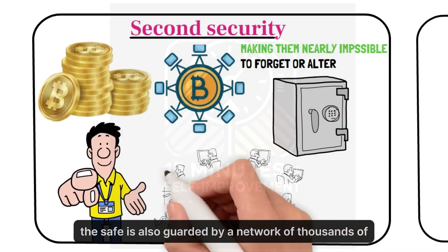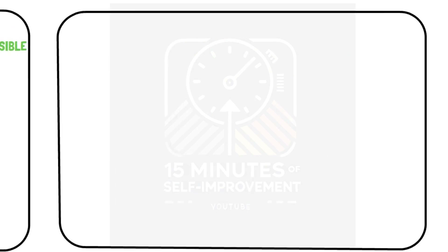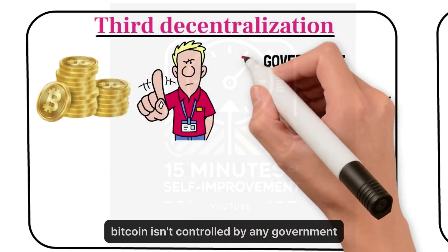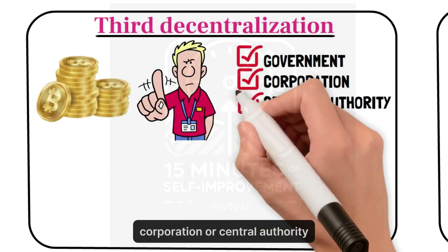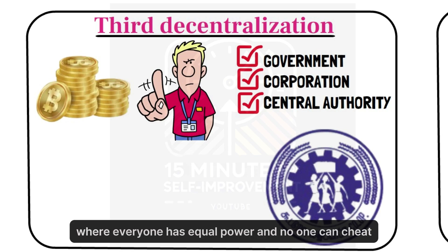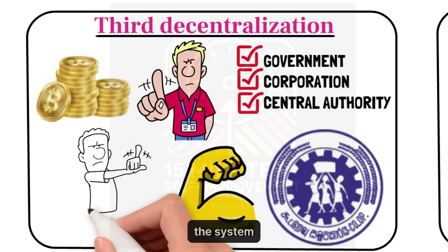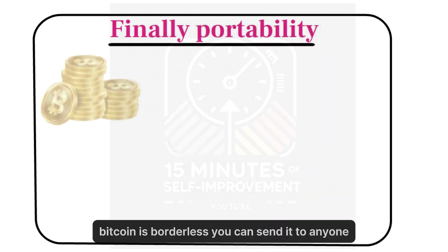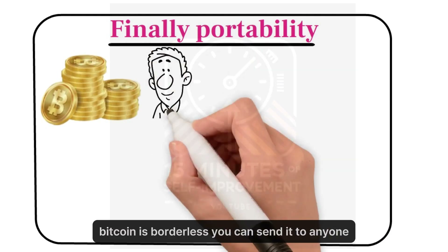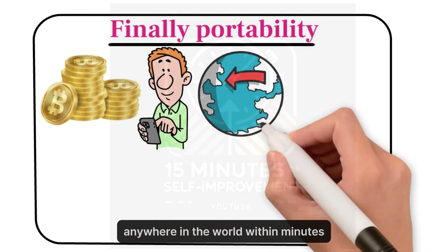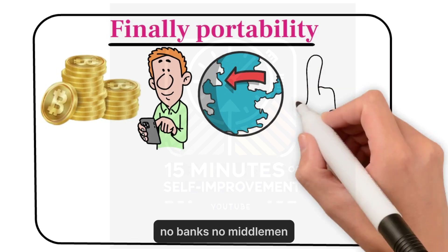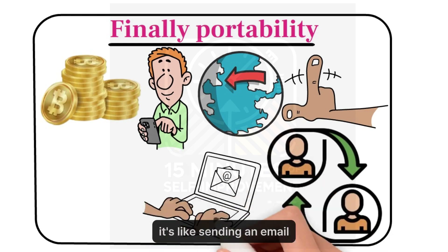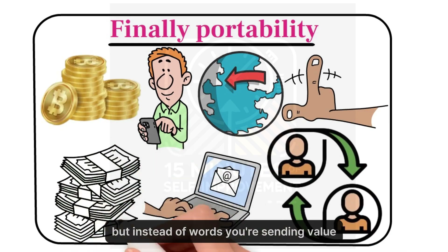But the safe is also guarded by a network of thousands of computers. Third, decentralization — Bitcoin isn't controlled by any government, corporation, or central authority. It's like a giant global co-op where everyone has equal power and no one can cheat the system. And finally, portability — Bitcoin is borderless. You can send it to anyone, anywhere in the world, within minutes. No banks, no middlemen, just peer-to-peer transactions. It's like sending an email, but instead of words, you're sending value.